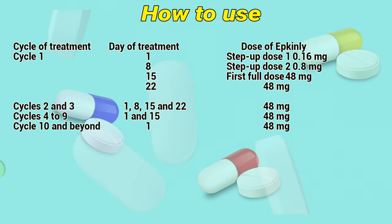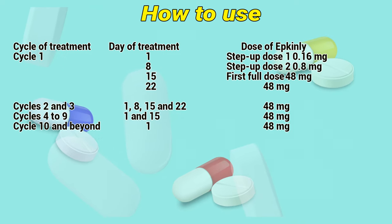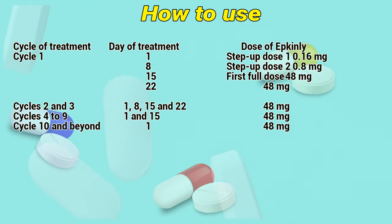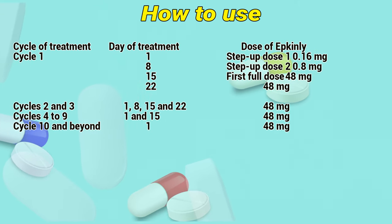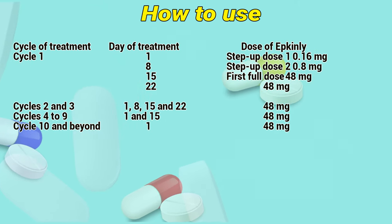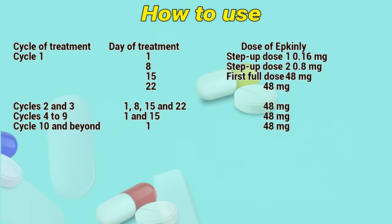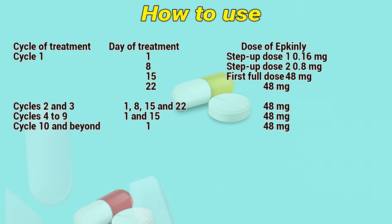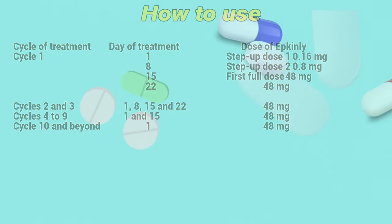Cycle 1: Day 1 step-up dose 1 is 0.16 mg; Day 8 step-up dose 2 is 0.8 mg; Day 15 first full dose is 48 mg; Day 22 is 48 mg. Cycles 2 to 3: Days 1, 8, 15, and 22 are all 48 mg. Cycles 4 to 9: Days 1 and 15 are 48 mg. Cycle 10 and beyond: Day 1 is 48 mg.